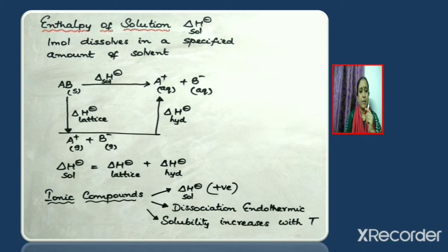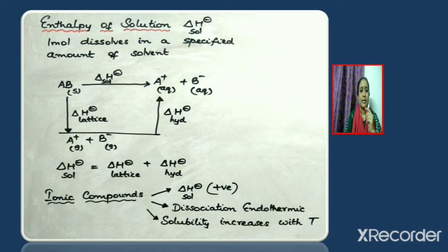The A⁺(g) and B⁻(g) formed then get hydrated and change to A⁺(aq) and B⁻(aq), so the enthalpy change accompanying this process can be taken as the hydration enthalpy. This is the reason why enthalpy of solution is taken as the sum of lattice enthalpy and hydration enthalpy.